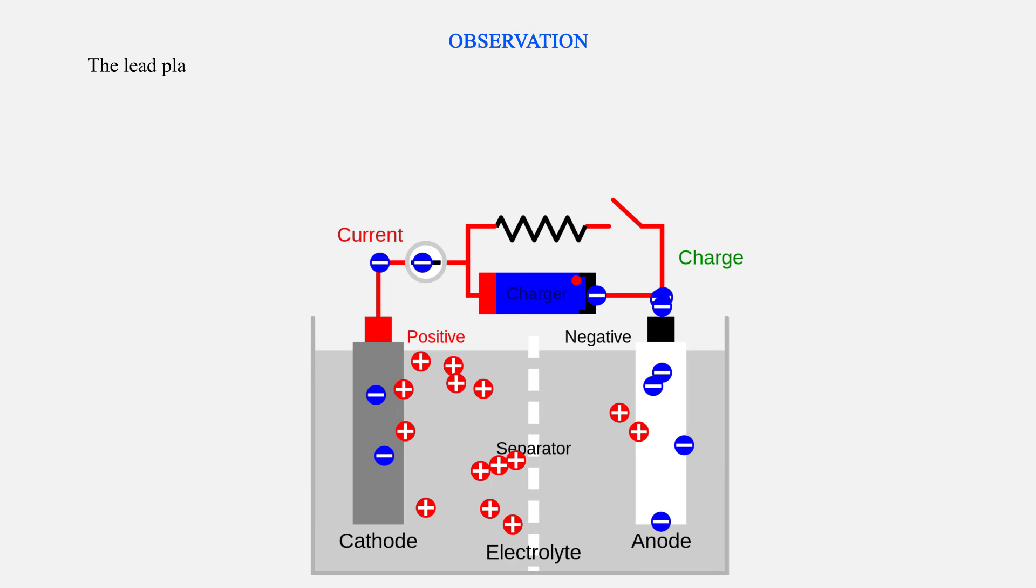Observation. The lead plate connected to negative terminal of the battery becomes coated with a chocolate brown color. The other plate remains gray. Gas bubbles are seen on the plates.